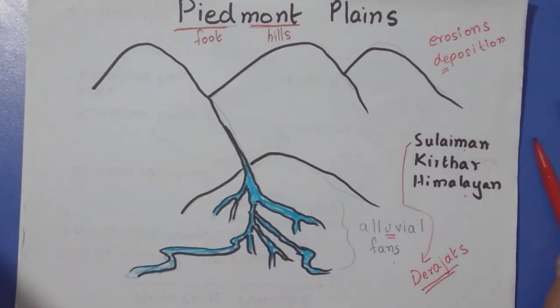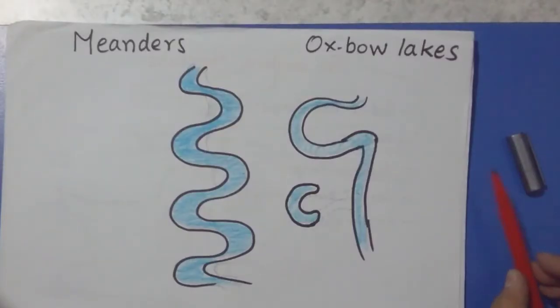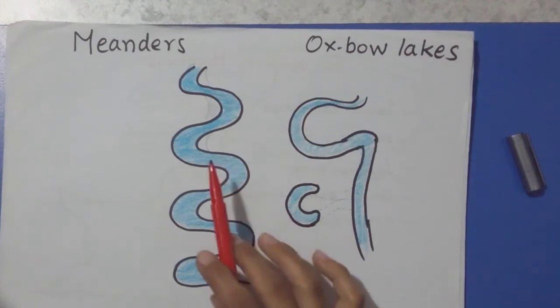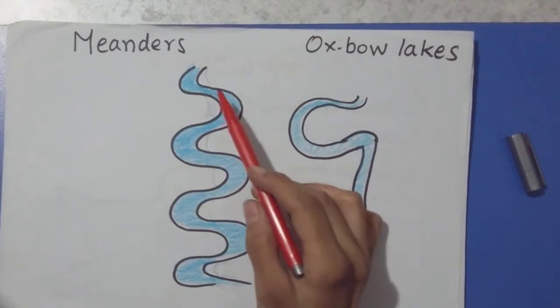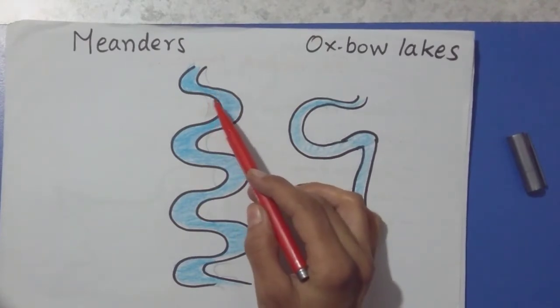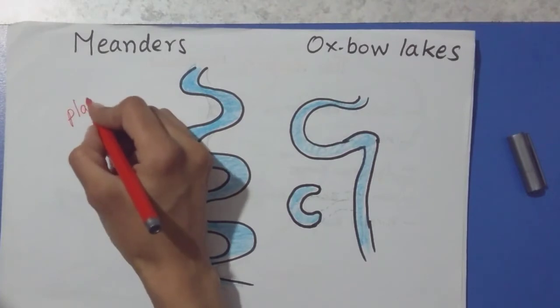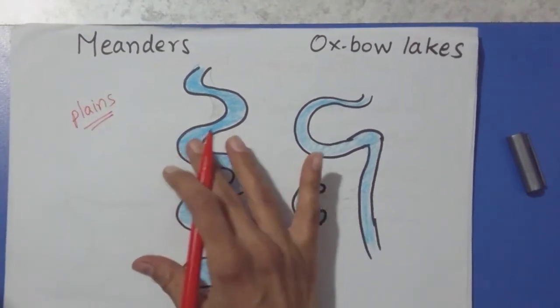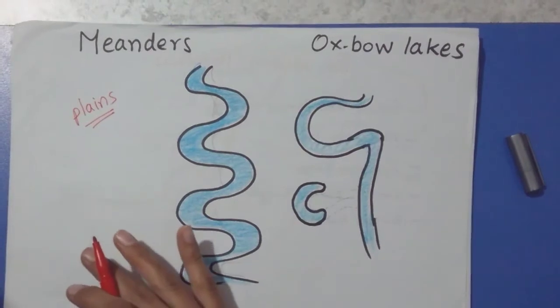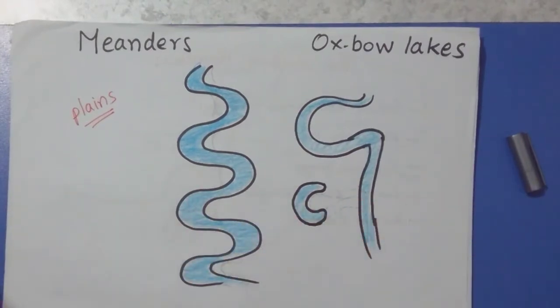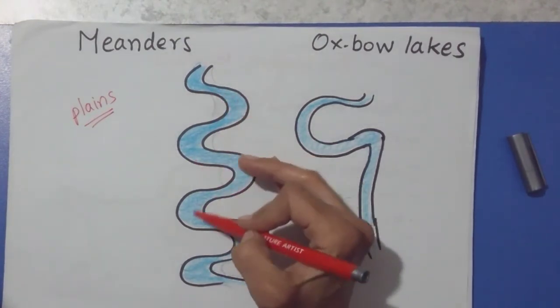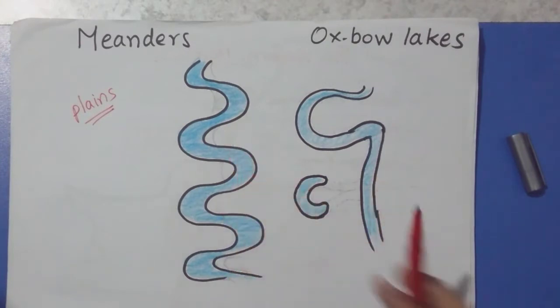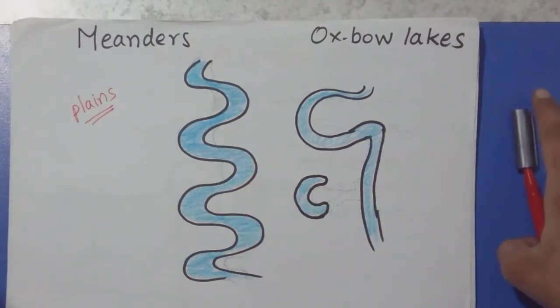That's all about the Piedmont Plains. Now let's discuss the meanders and oxbow lakes. This is again a very interesting feature formed by the river. When it flows through plains—not through mountains but plain areas—it starts to bend and go crisscross, taking bends and curves towards the right and left. These bends are called meanders.